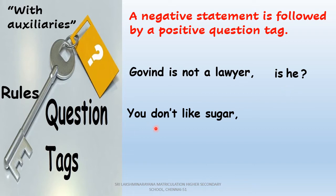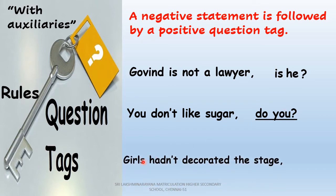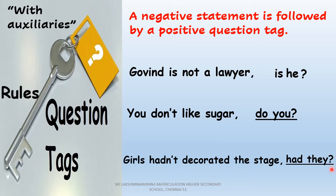Look at another example. Here you find the auxiliary verb 'had.' Bring the auxiliary verb and follow it with the pronoun, then end with a question mark. The subject is 'girls,' which is in plural form, so you write the plural pronoun 'they.' The question tag is 'had they?'